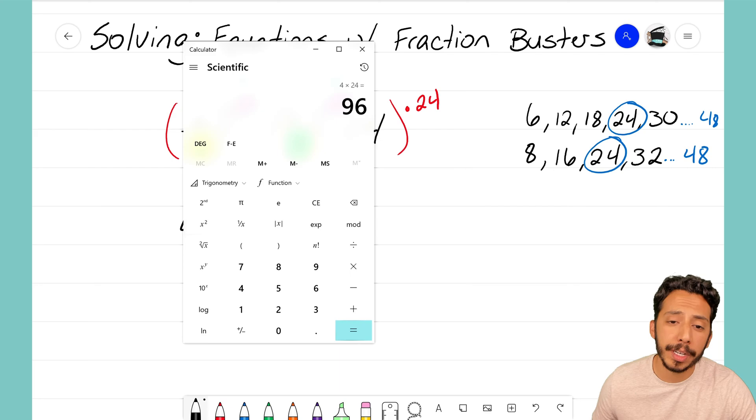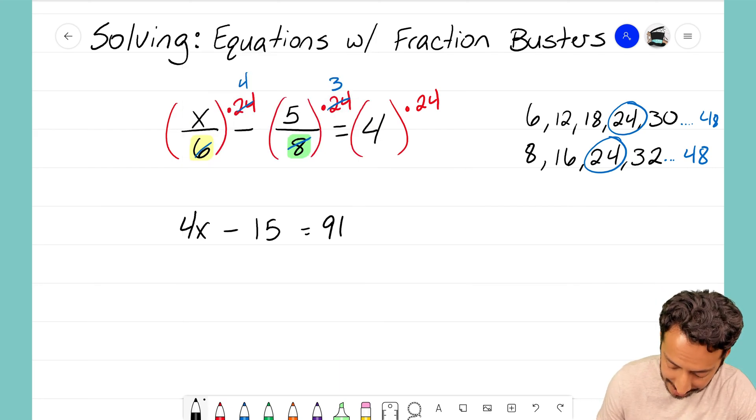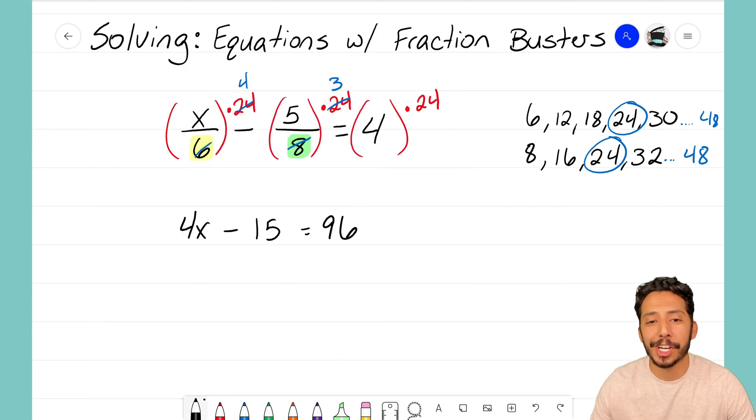for that one. Four times 24 gives us 96. Look at what we just did here—we took that complicated equation at the beginning where we had two fractions both with different denominators, and we were able to get it to a simpler equation just by multiplying it by their least common multiple.